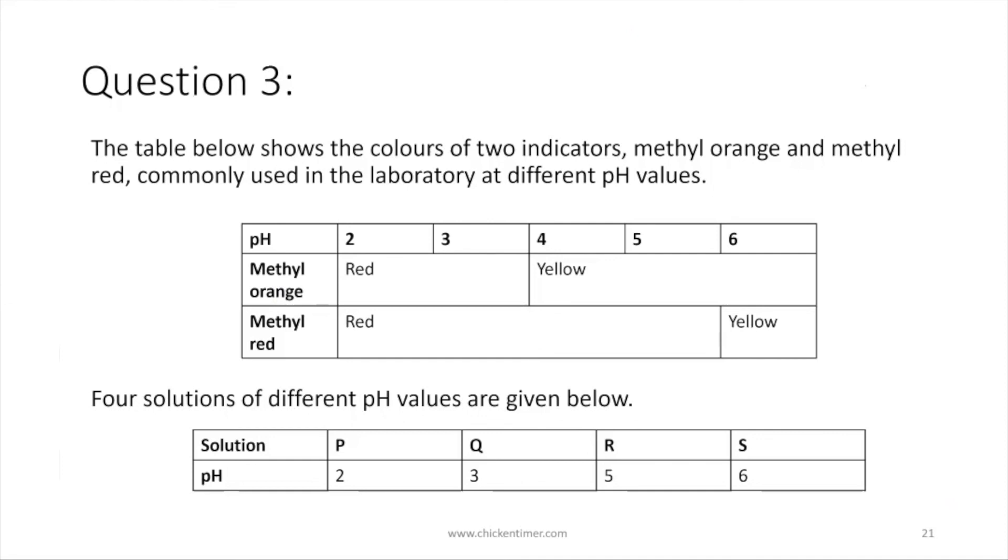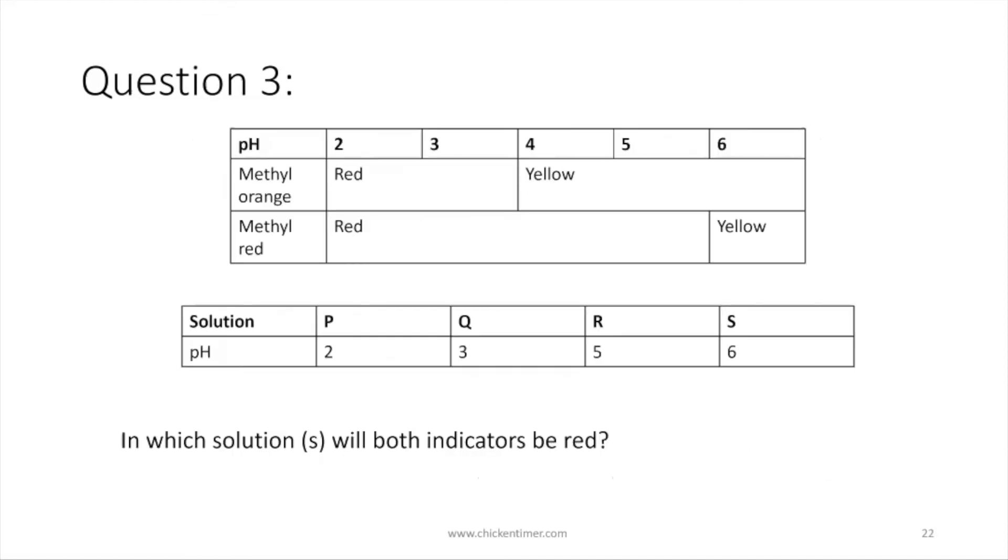Methyl orange will change color at pH around 4, so for pH 2 and pH 3 is already red color, then 4, 5, 6 is yellow. Methyl red is 2, 3, 4, 5 is red, and then 6 is yellow. The question is: in which solution will both indicators be red? P and... okay.